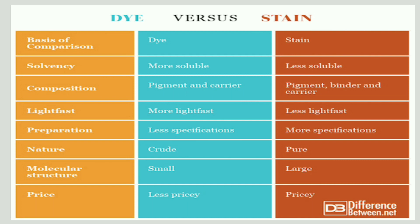Let us summarize all the points. A dye is more soluble than a stain. Based on composition, a dye has a pigment and a carrier, whereas a stain has pigment, binder, and a carrier. Lightfast: dyes are less lightfast and stains are more lightfast. Preparation: dyes have less specifications, whereas stains have more specifications. Based on nature, a dye is crude whereas a stain is pure. Based on molecular structure, a dye has small molecules and a stain has large molecules. Price: a dye is cheaper, whereas a stain is pricier.